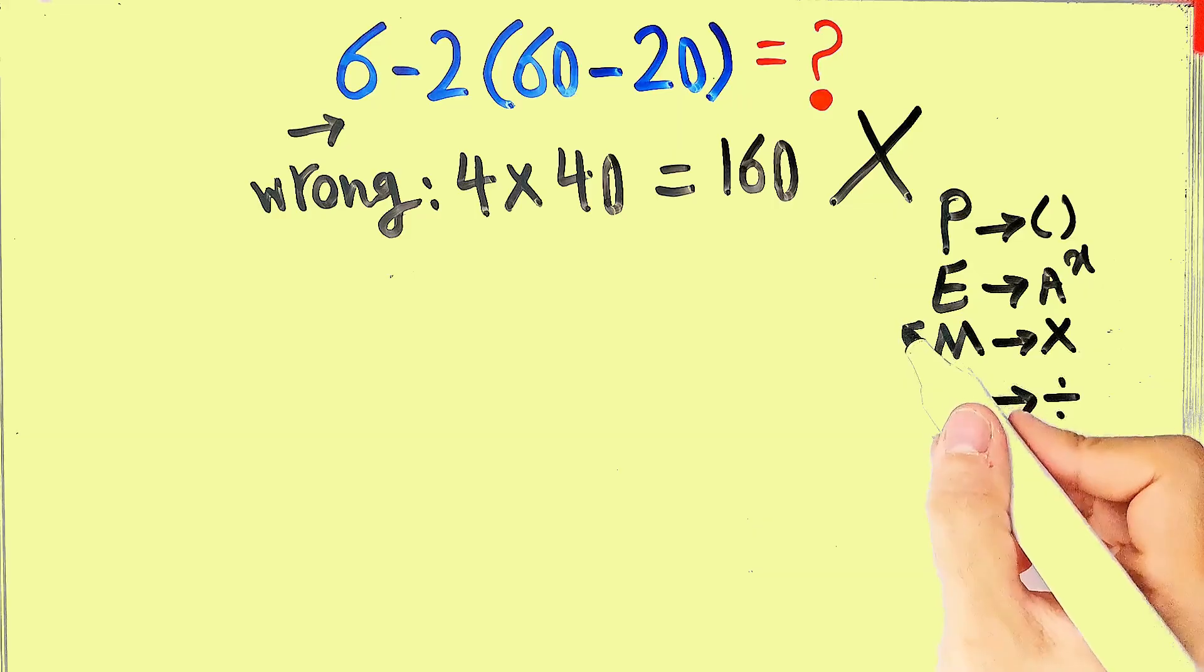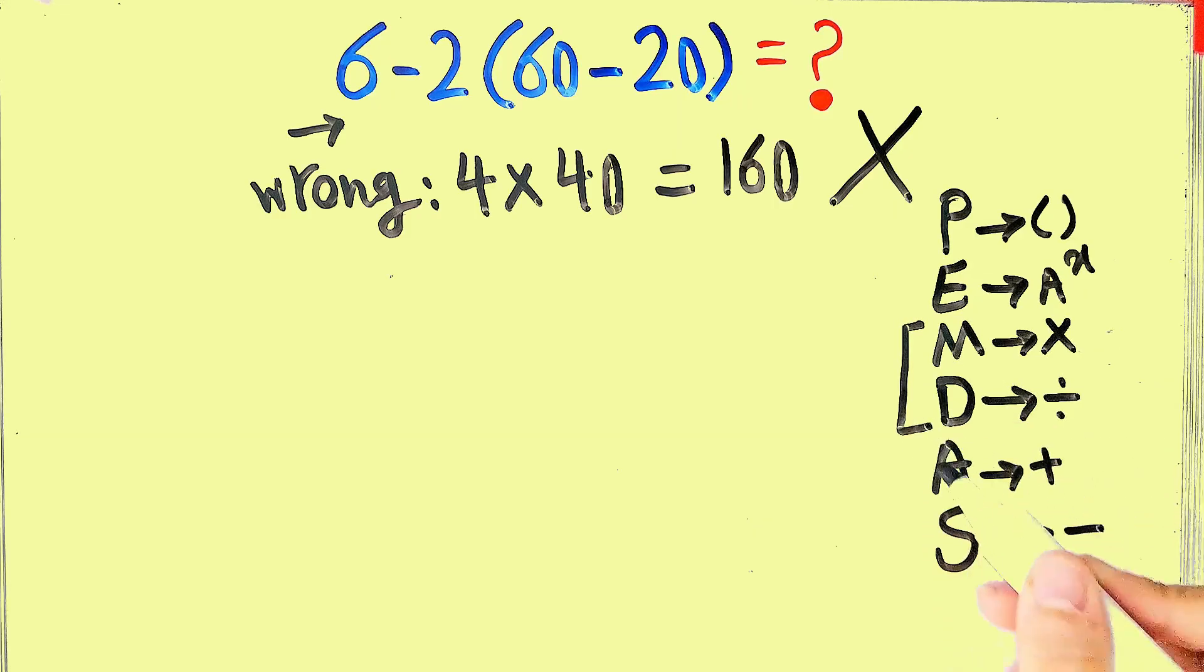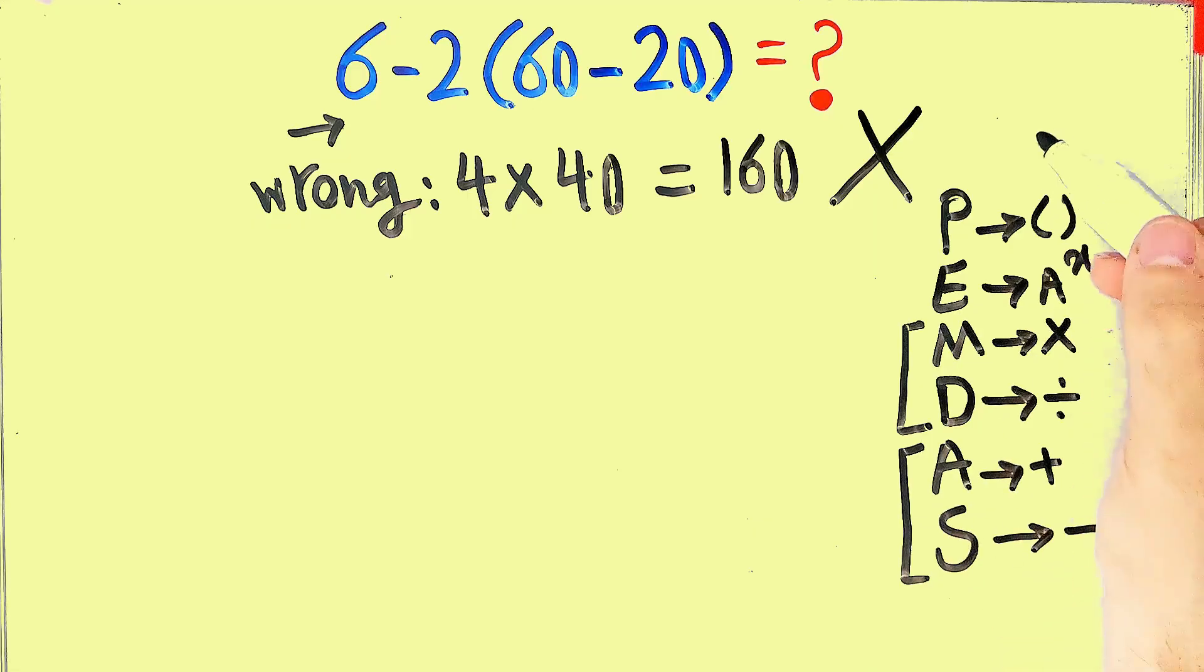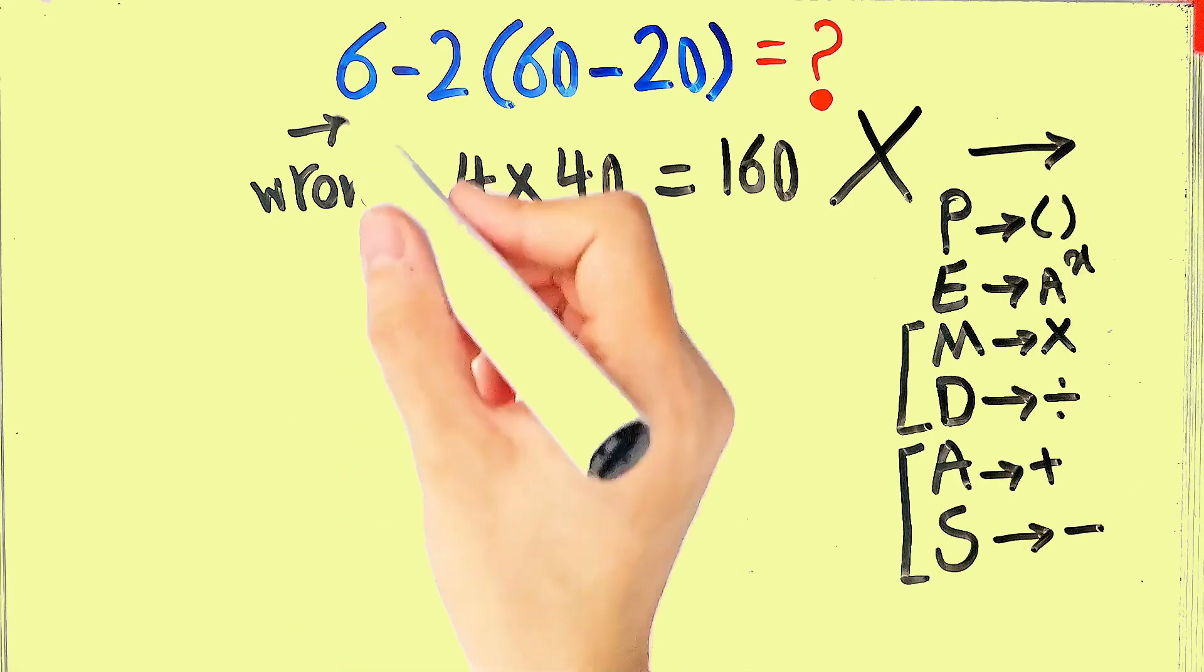Multiplication and division have the same level of priority. Also, addition and subtraction have the same priority. And when we have both in an expression, we start from the left and simplify the question.